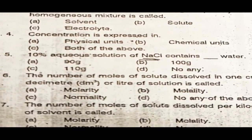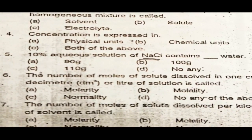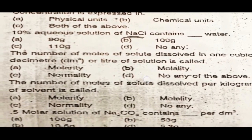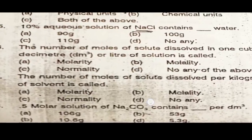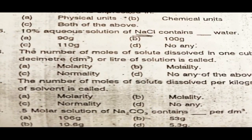Question 5: A 10% aqueous solution of sodium chloride contains how much mass of water — 90 grams, 100 grams, 110 grams, or none. Question 6: The number of moles of solute dissolved in one cubic decimeter or one liter of solution is called molarity, molality, normality, or none of the above. Question 7: The number of moles of solute dissolved per kilogram of solvent is called molarity, molality, normality, or none of the above.